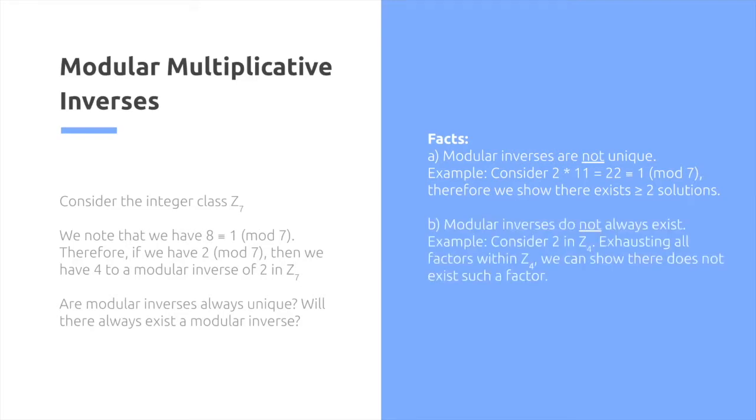Modular inverses do not always exist. Consider 2 in z4. Exhausting all factors within z4, we can show there does not exist such a factor.